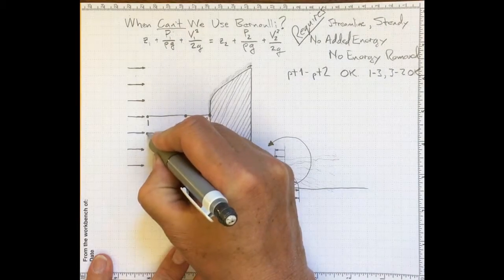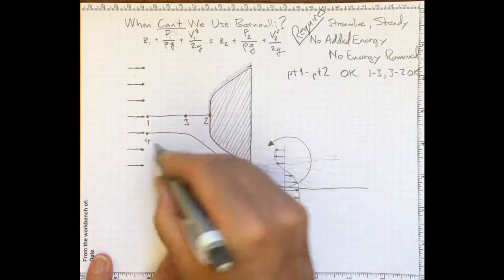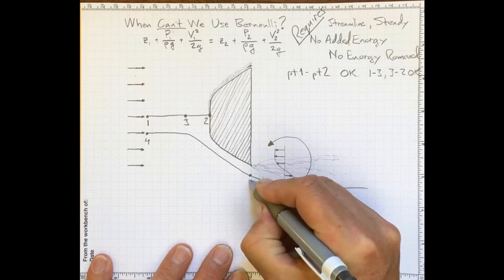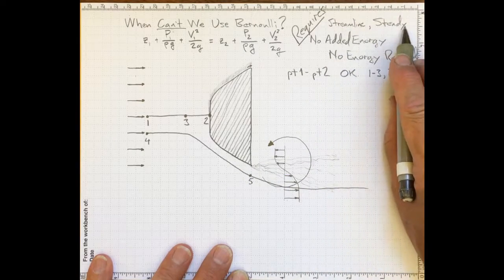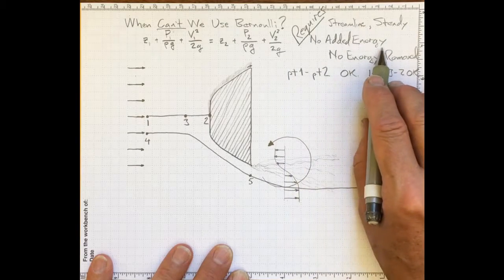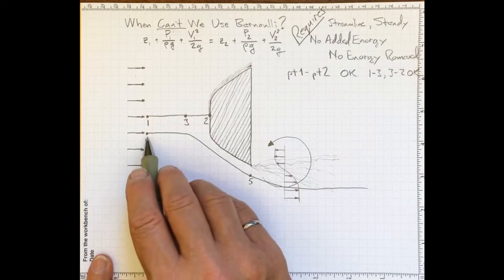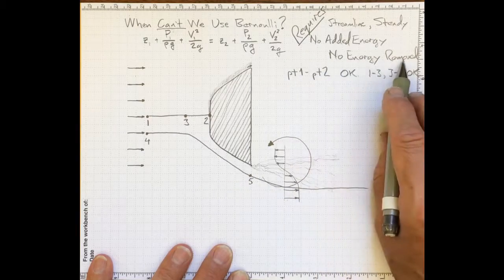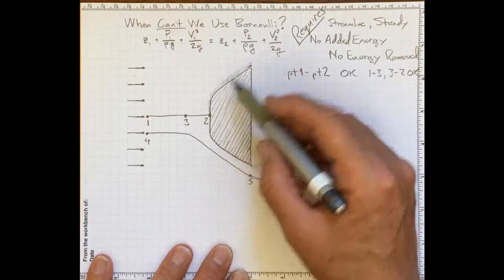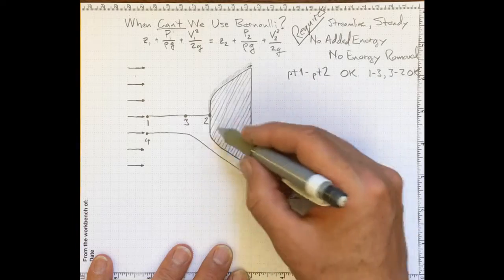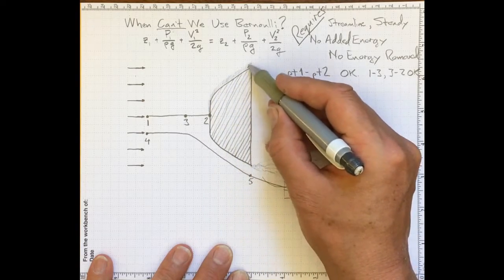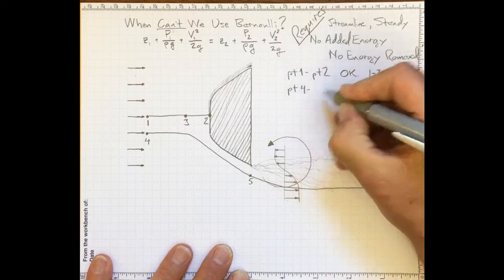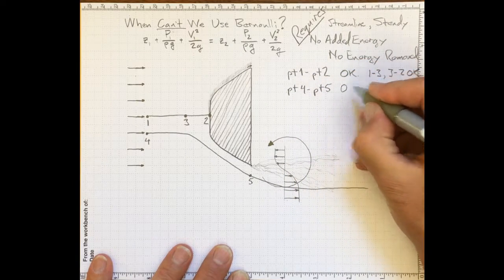We could call this location four, and following along this path to location five, we're following a streamline, we're in steady flow, there's been no added energy. The flow is accelerating and the pressure will be dropping, and there's no energy removed because we're well outside this boundary layer area where friction slows down the flow close to the wall. So from four to five, we're okay.